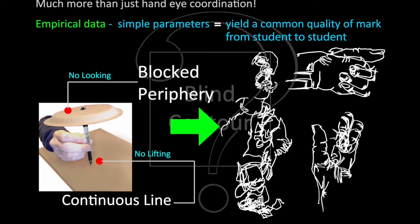The result of a blind contour drawing with these two simple parameters yields a very common quality of mark from student to student.